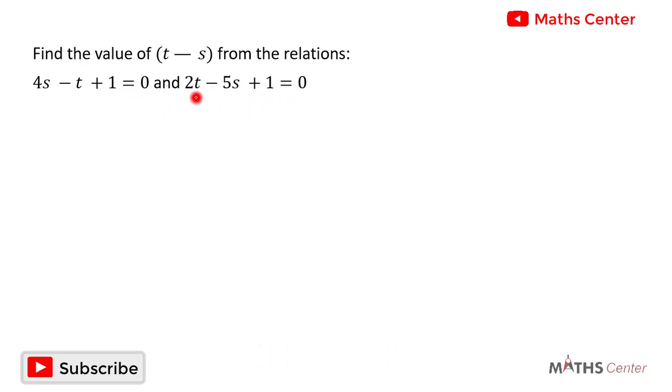These two are linear equations in two variables, and so we will solve them simultaneously for the values of x and t. After that, we will find the value of t minus x.